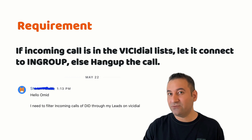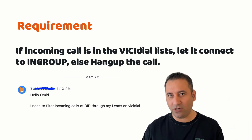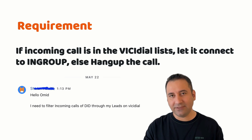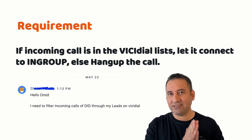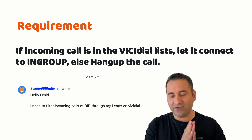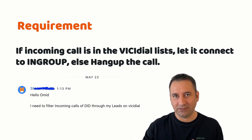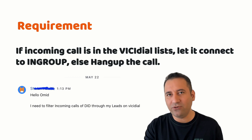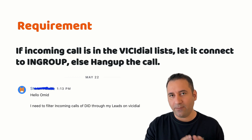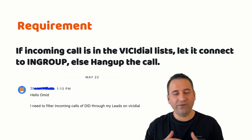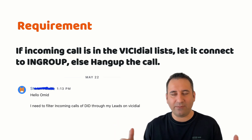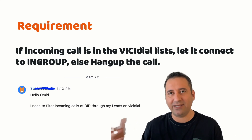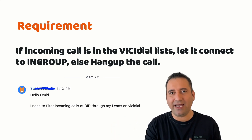Let's go through the requirements once more. We are receiving an incoming call and we need to check if the caller ID is in our database. If it is, we let it connect to our in-group or queues. But if it is not there, we will play a message and then hang up the call — in this scenario we will hang up the call.